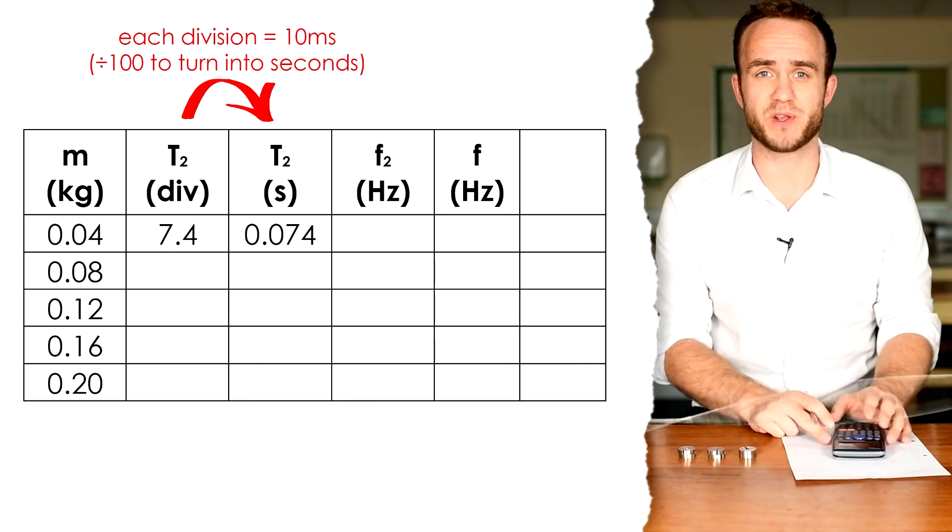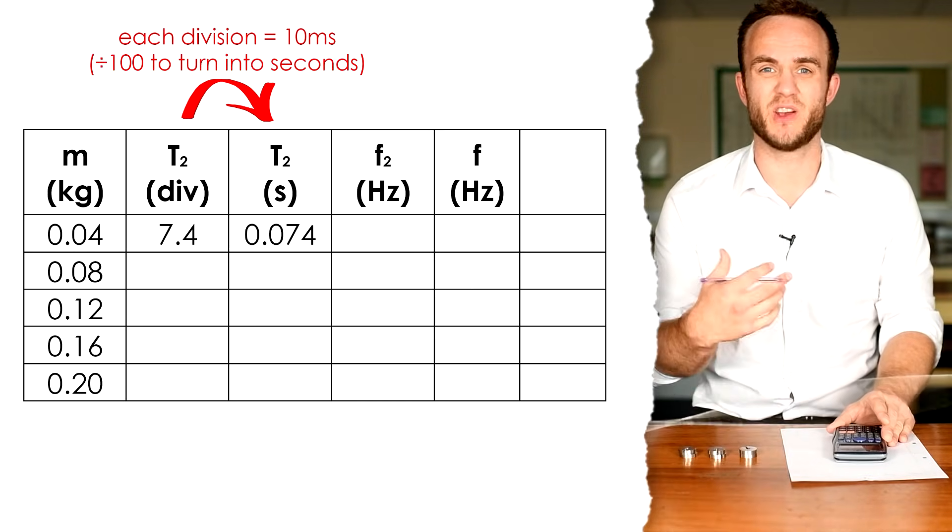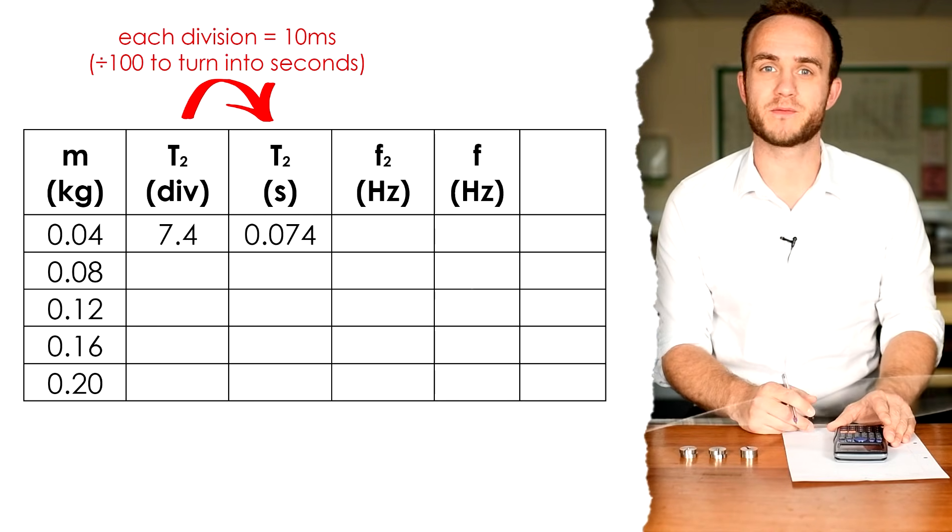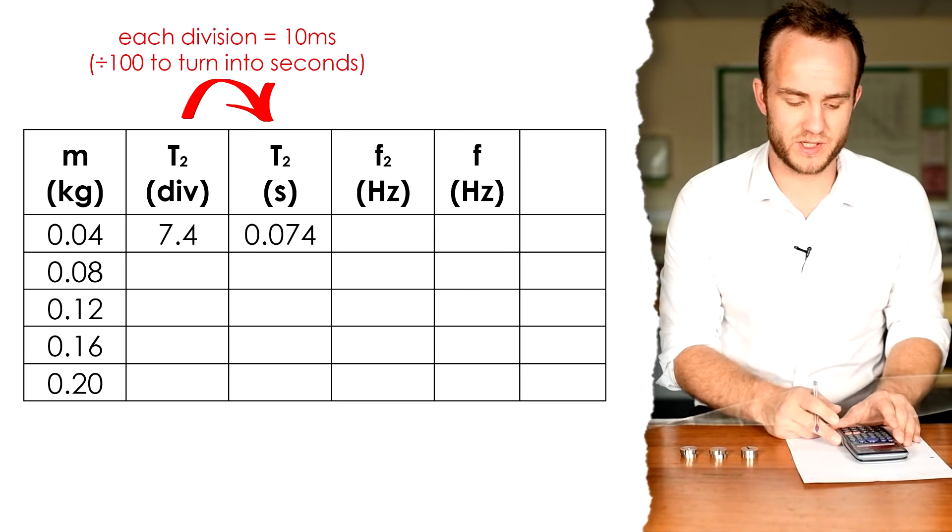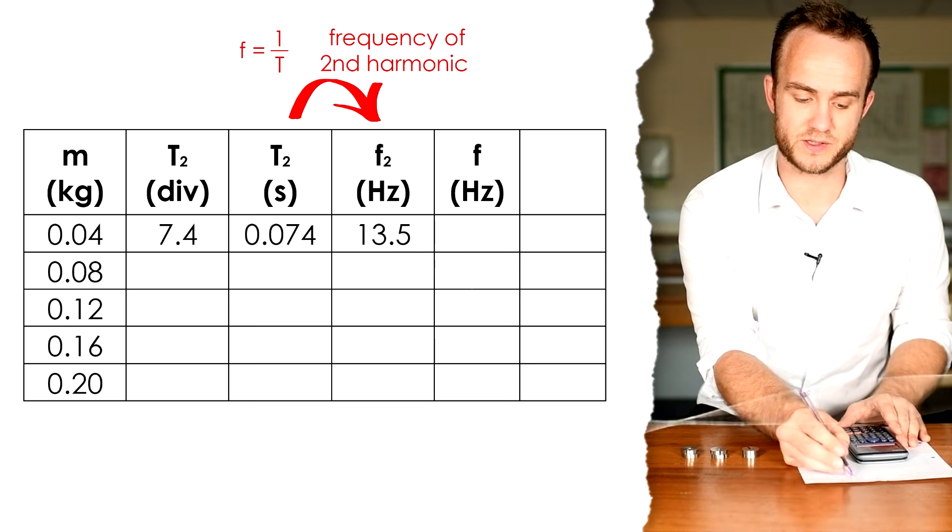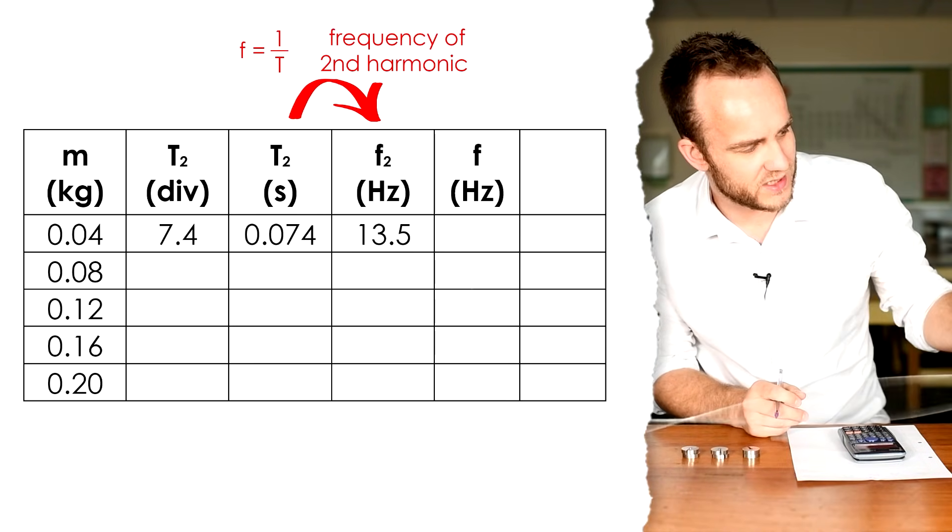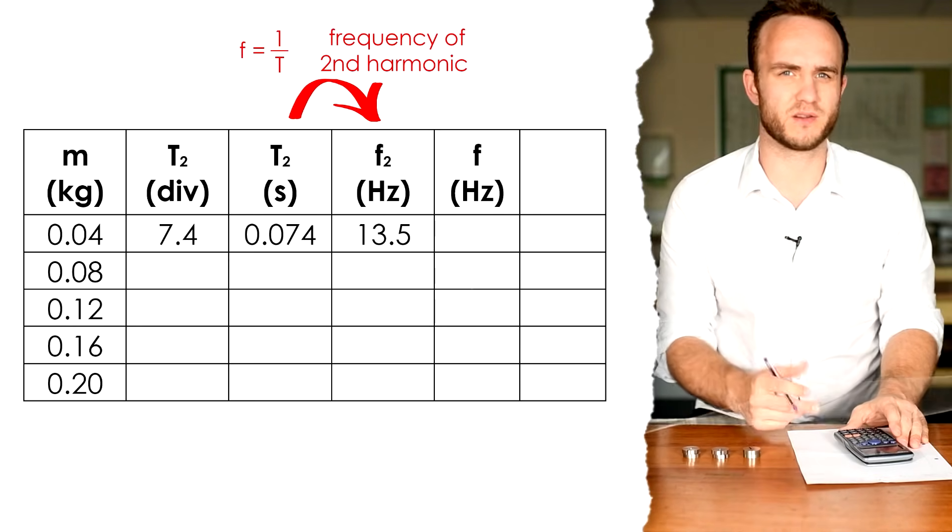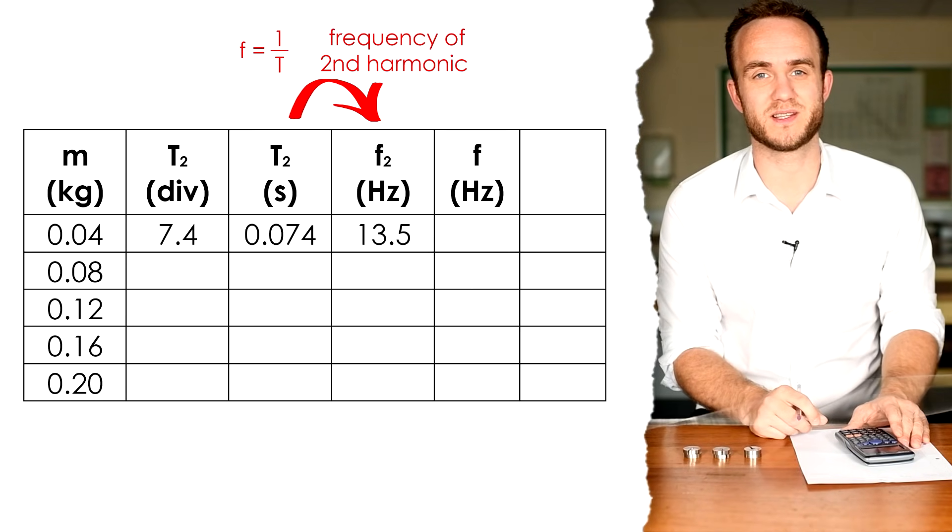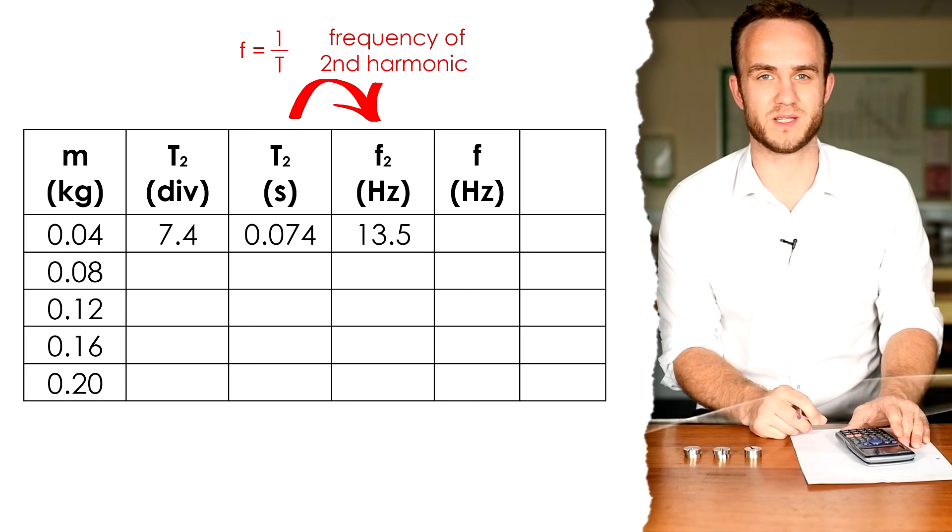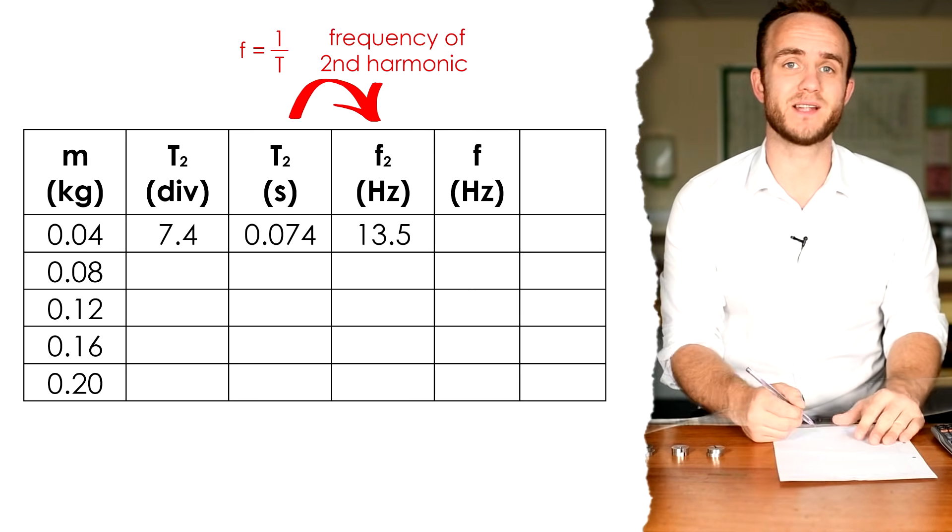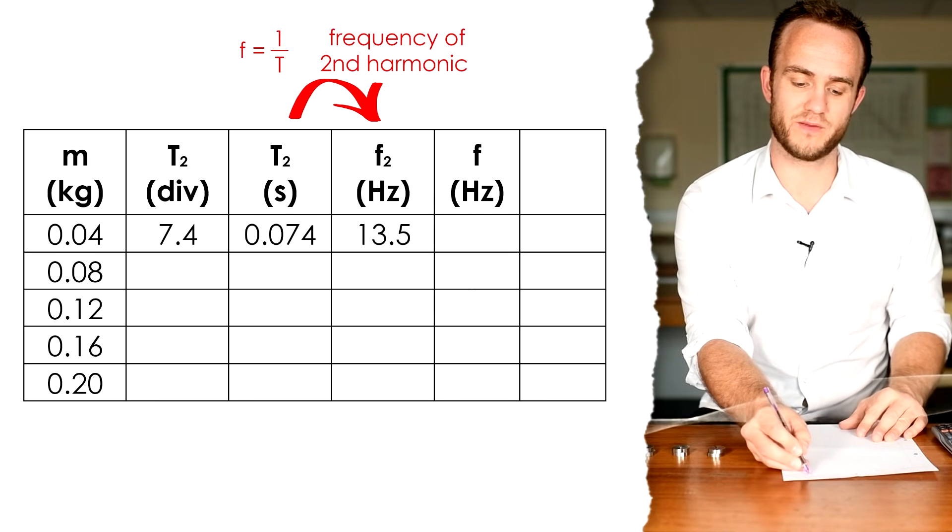Now, to turn this time period into frequency, time period is seconds, frequency is hertz, or per second. So, that means that they are reciprocals of one another. Frequency is one divided by the time period. So, one divided by 0.074, and that gives us 13.5 hertz. Now, on my signal generator, I can see the dial says about 20 hertz. My signal generator is quite a bit off. You can't trust a dial on a signal generator. Use an oscilloscope to measure the frequency accurately.